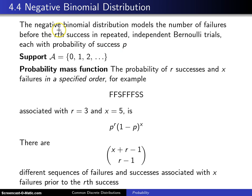This sounds a lot like the geometric distribution, but instead of the number of failures before the first success, it's generalized to the number of failures before the rth success. The support will begin at zero and go to infinity, because you could have zero failures before the rth success, or one failure, and so on.